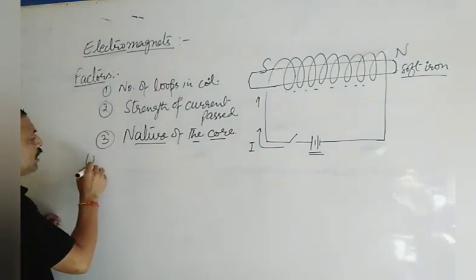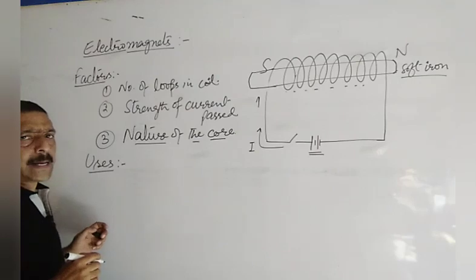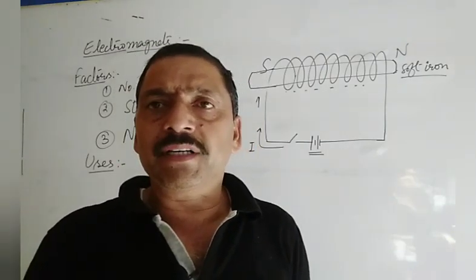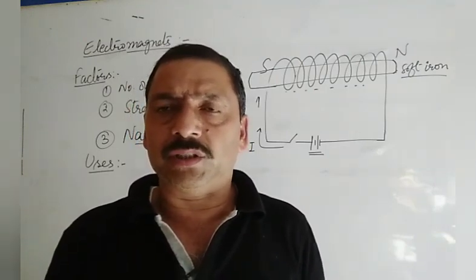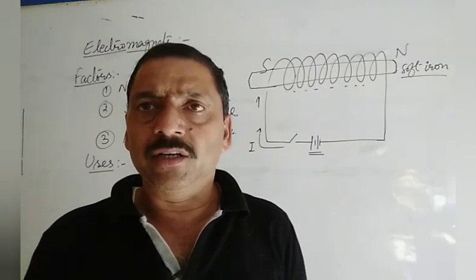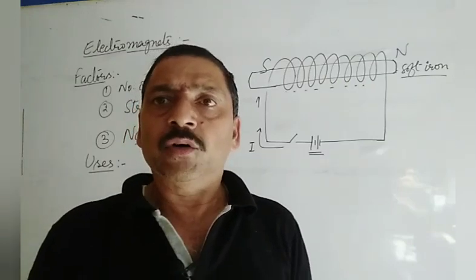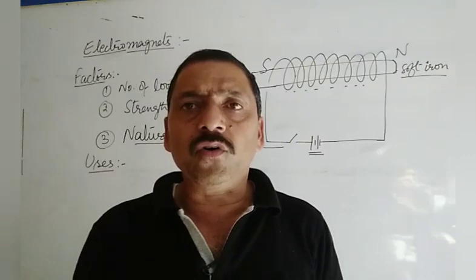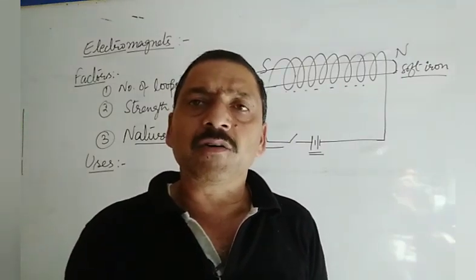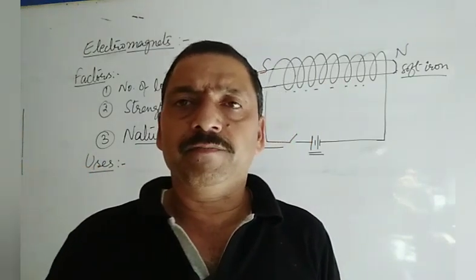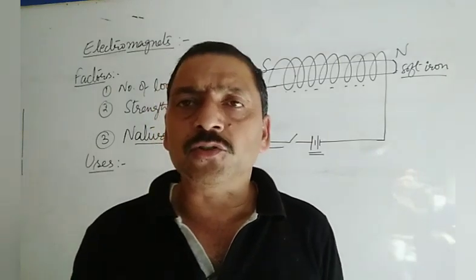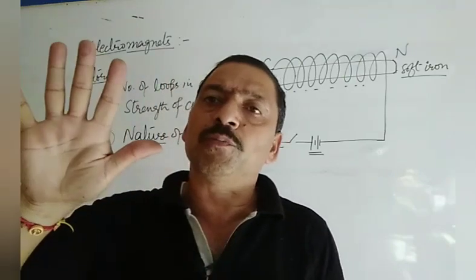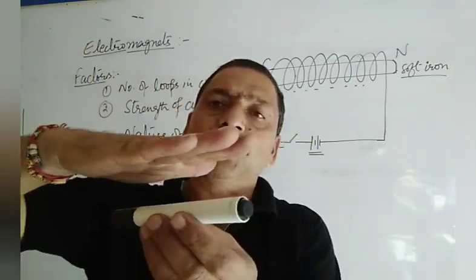Now discussing the uses of electromagnets: they are used in transformers, relays, loudspeakers, and telephone diaphragms. They are also used in large cranes at ports and shipyards, where a big electromagnet with a soft iron core is used to lift heavy iron plates or containers. When current flows, the magnet works, and when switched off, the load is released.